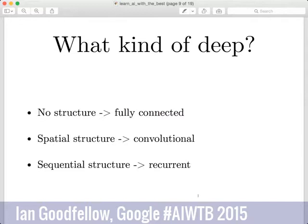Some data doesn't really have any structure at all — it's just a list of measurements — and in that case you can apply a fully connected neural network. A lot of tasks have spatial structure, like images, videos, data based on maps, or sensors aligned on a grid — in that case you can use a convolutional network, which applies the same little function at every different point in space so you don't need to independently relearn it at every location in the grid.